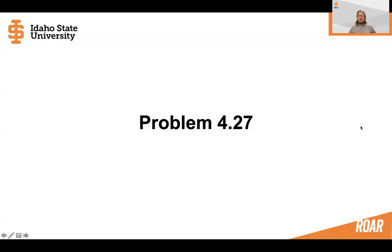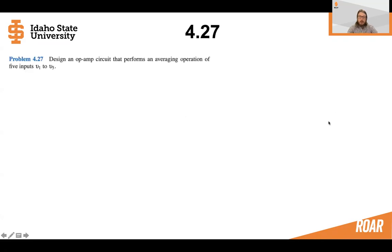Hello, everybody. Now let's take a look at problem 4.27. All right, so this problem asks us to design an op-amp circuit that performs an averaging operation of five different inputs. We'll call them V1 through V5.